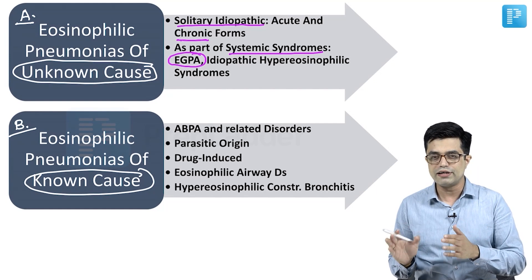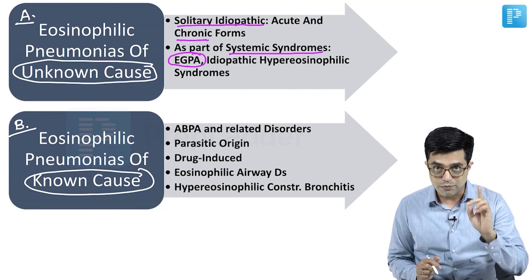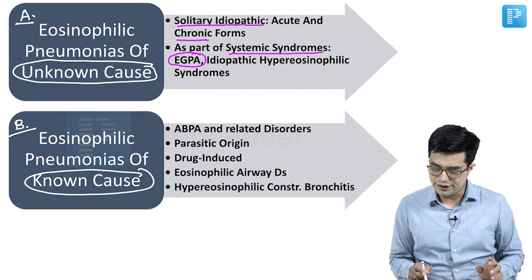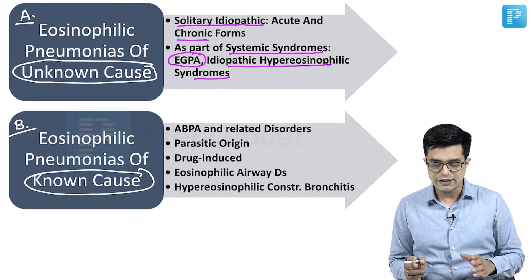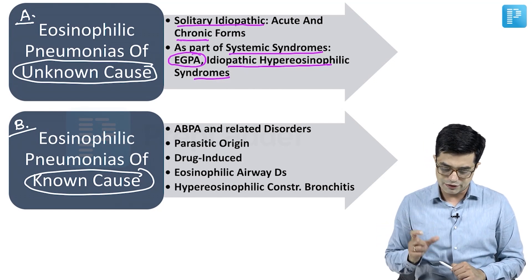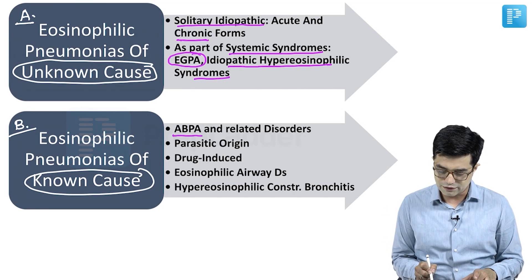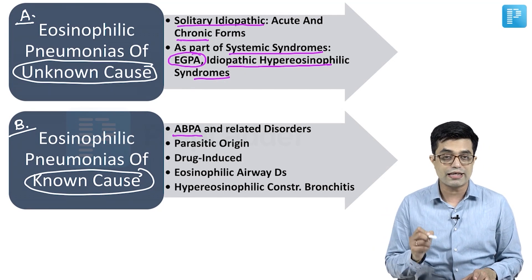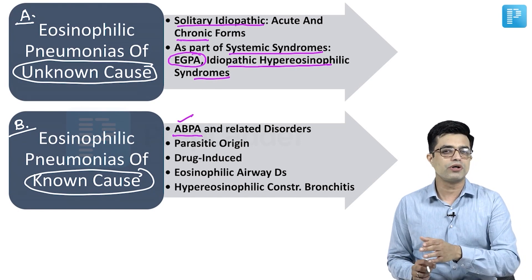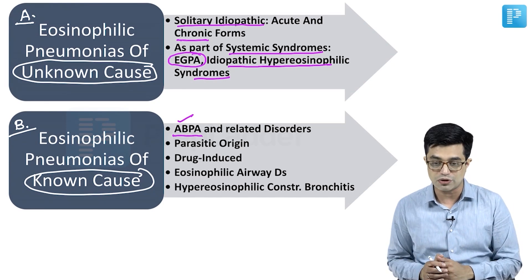A few points related to EGPA will be discussed later. For now, remember that EGPA is the preferred term for Churg-Strauss syndrome. The second group includes idiopathic hypereosinophilic syndromes, all included under eosinophilic pneumonias of unknown cause. Moving to eosinophilic pneumonias of known cause, the typical example is ABPA — associated with Aspergillus. ABPA also has related disorders on a spectrum, so we call it ABPA and its related disorders.